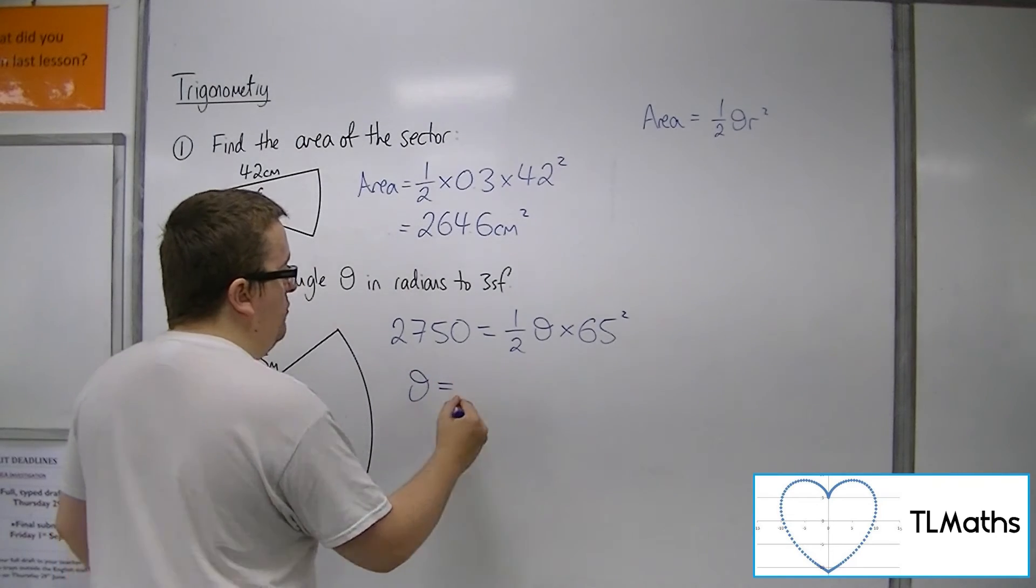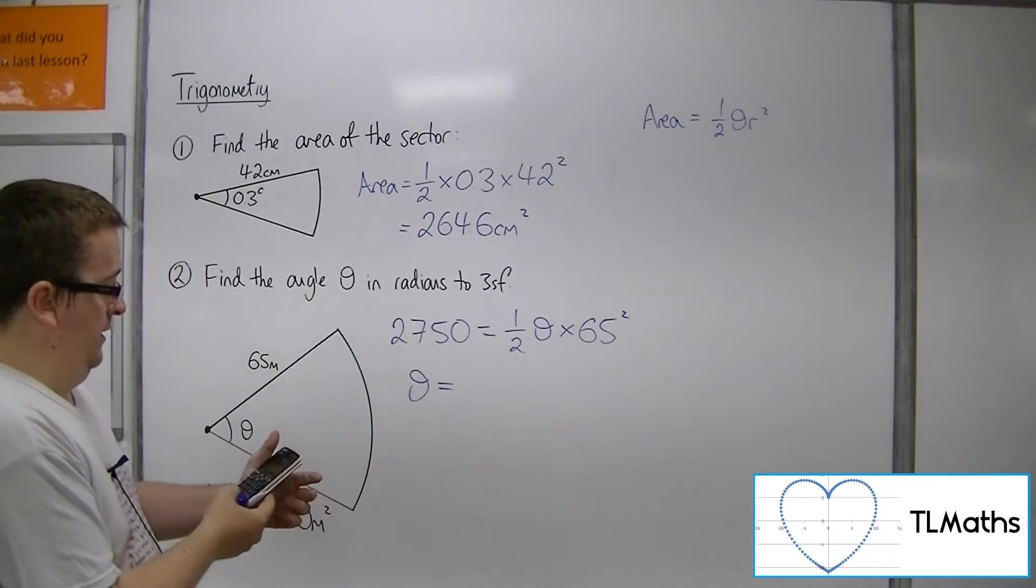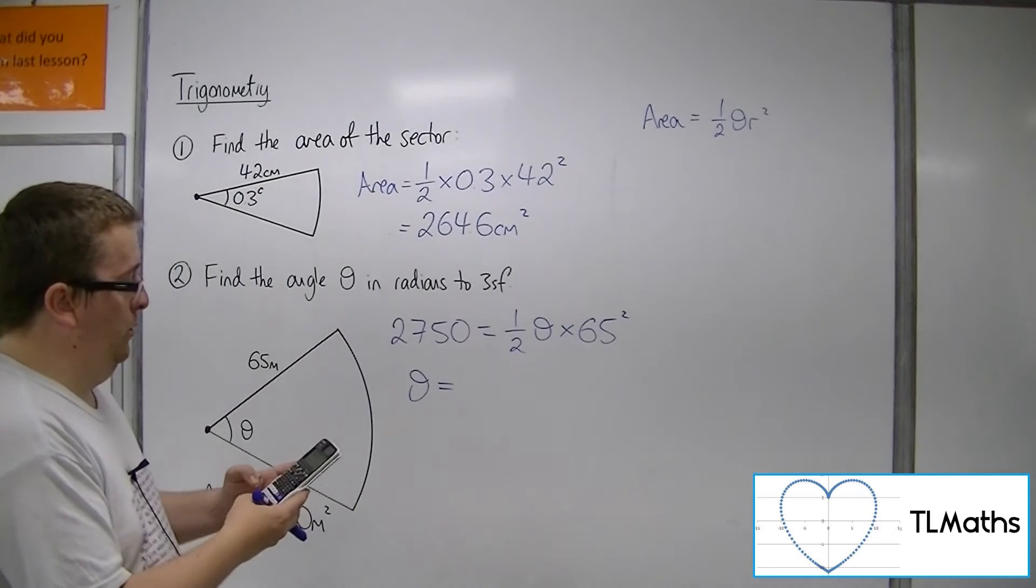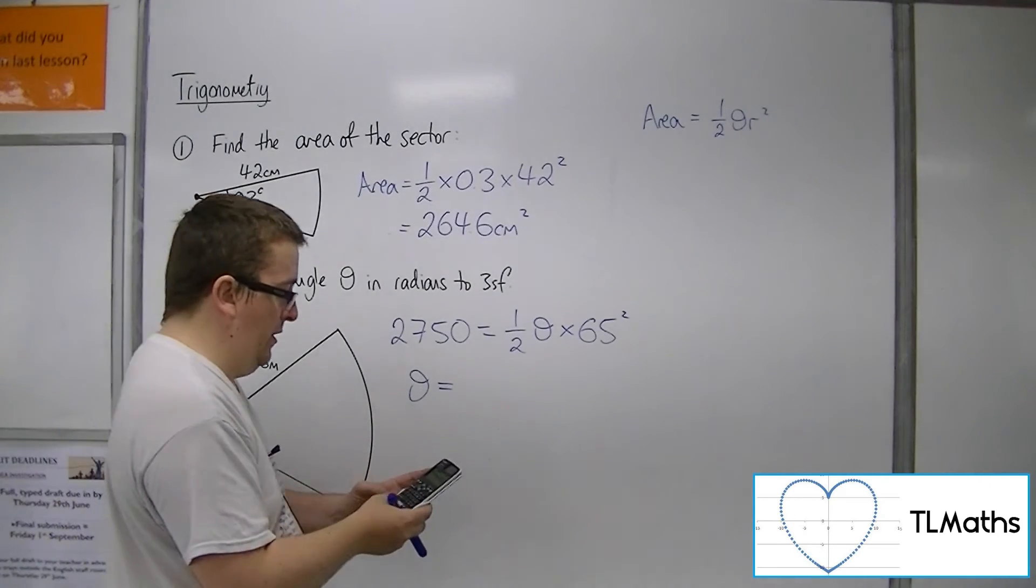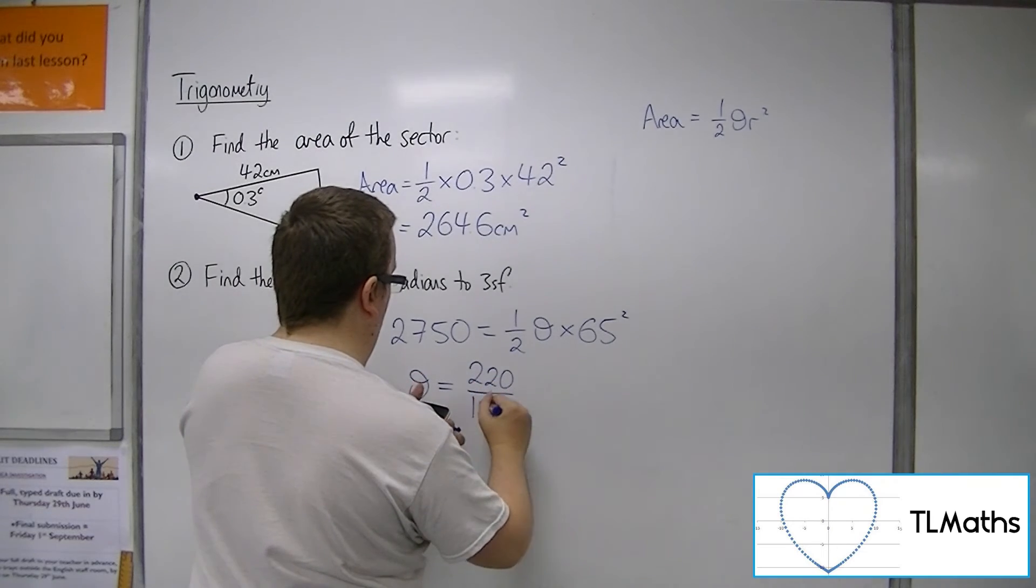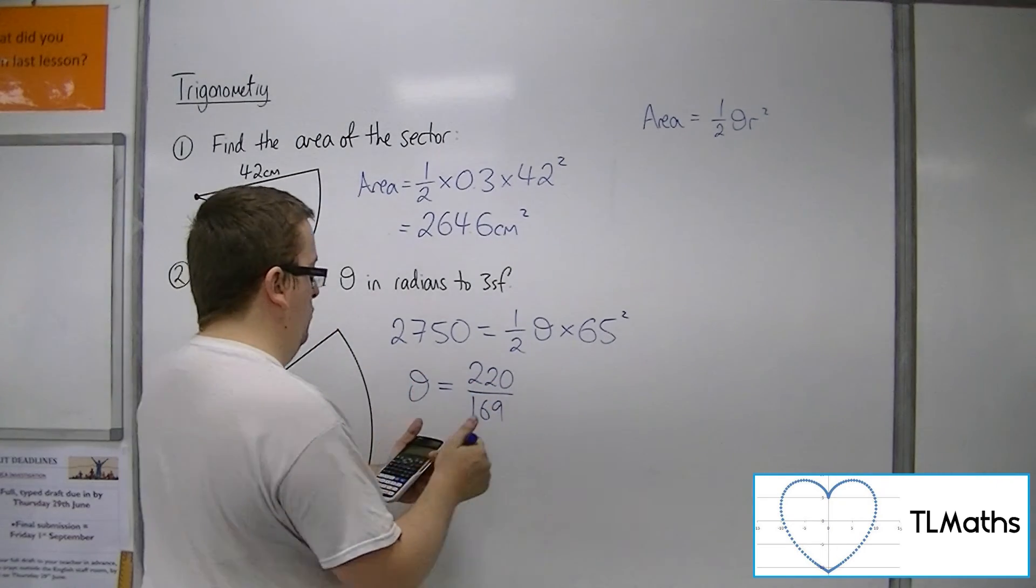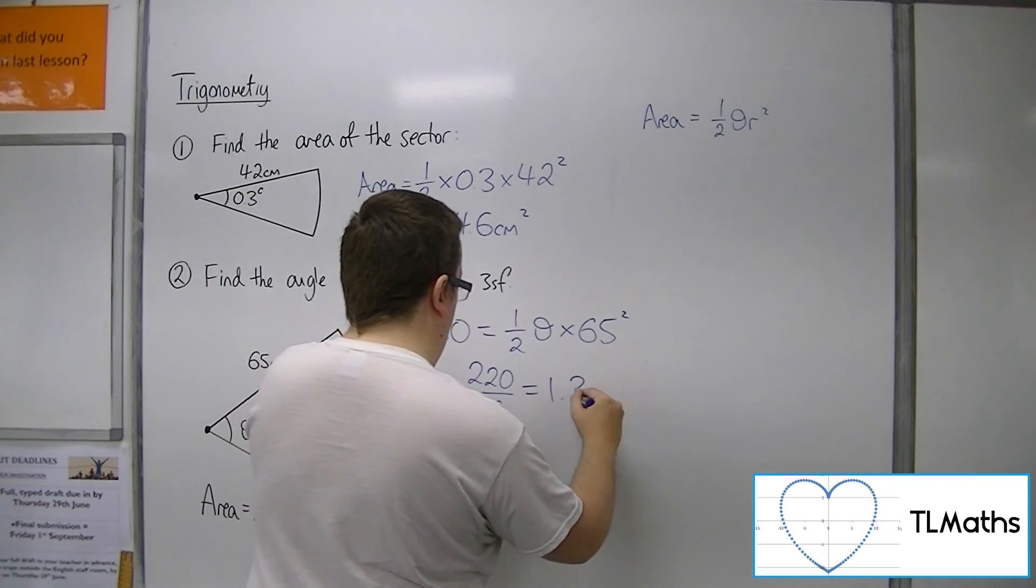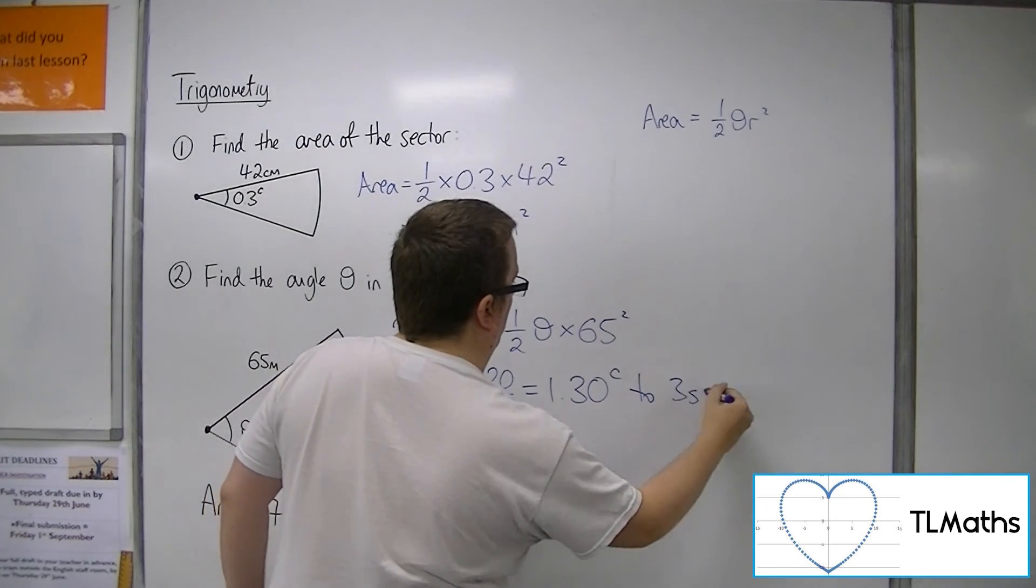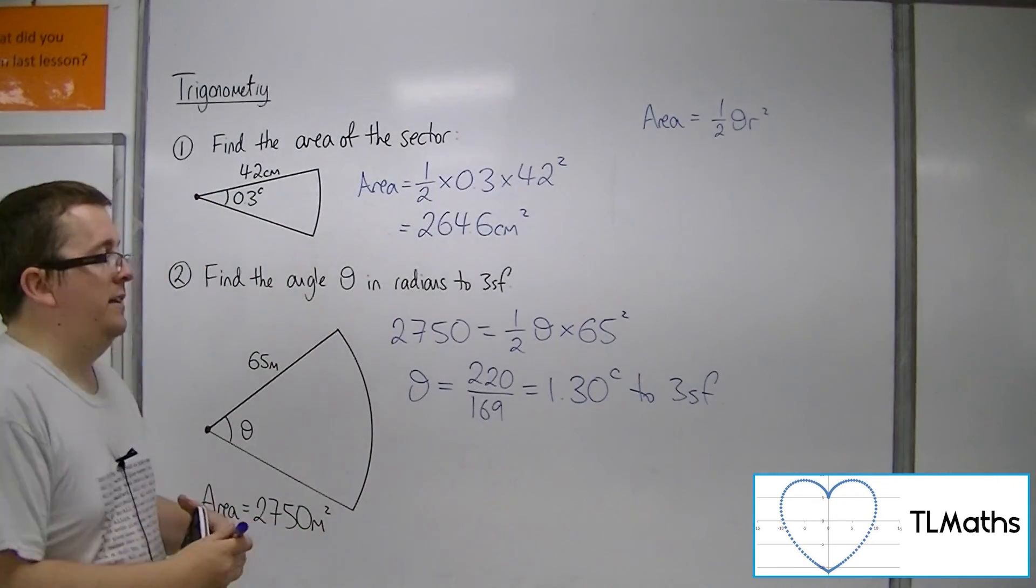So I can rearrange this to get theta. So 2750 times by 2 and then divide by 65 squared gets me 220 over 169, which is 1.30 radians to 3 significant figures.